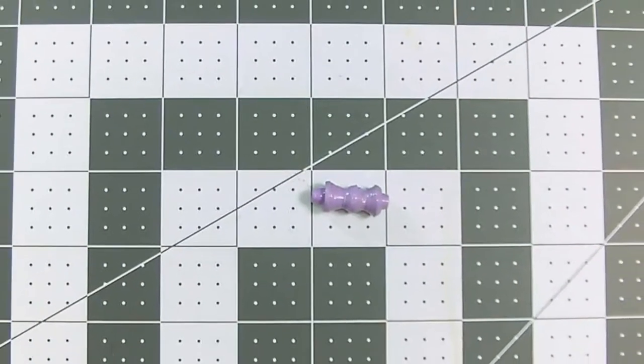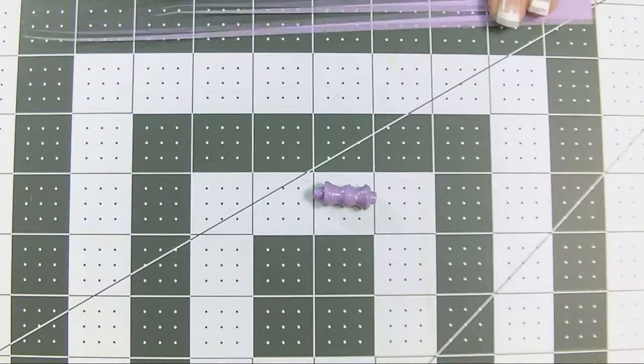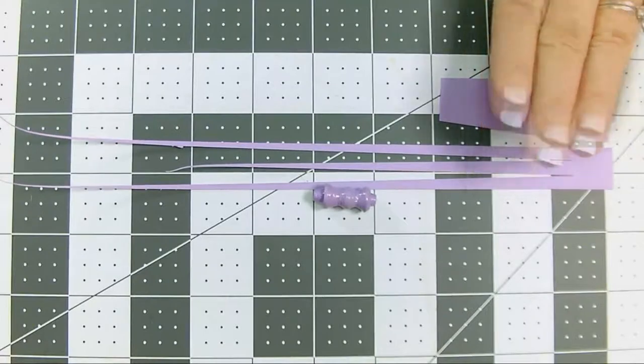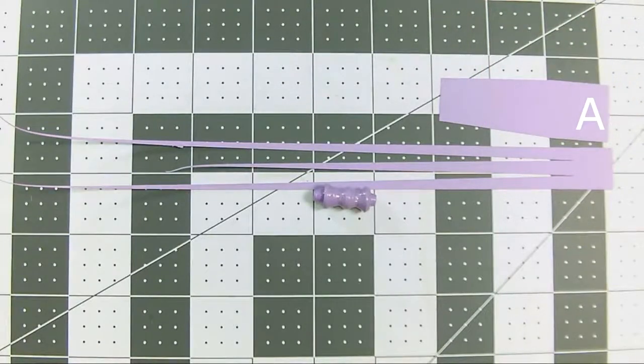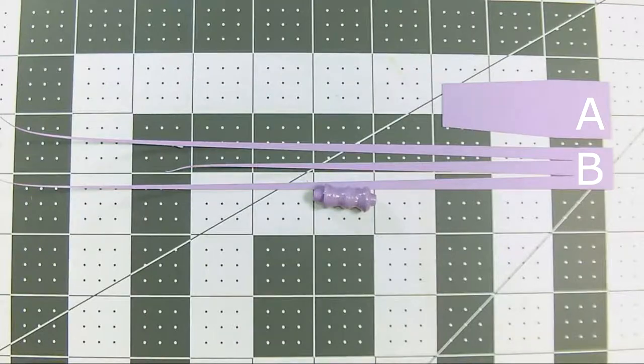This bead shape can be made with one or two strips. Strip A is the core of the bead. Its only purpose is to make the bead thicker. Strip B makes the distinctive bow tie shape. You can make this bead using both strips or just with strip B, and I'm going to demonstrate both ways.